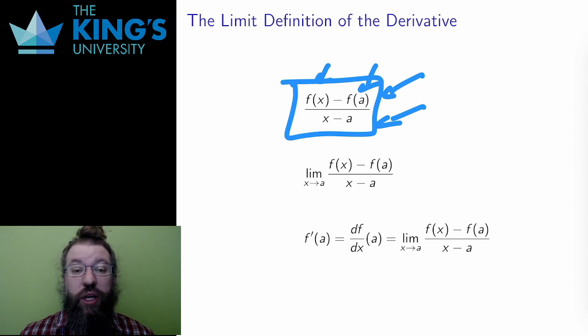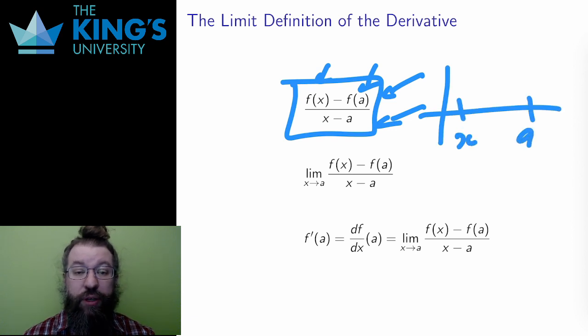The approximation process worked by making the second point move closer and closer to the first. As a limit, this is the input x getting closer and closer to the fixed input a.